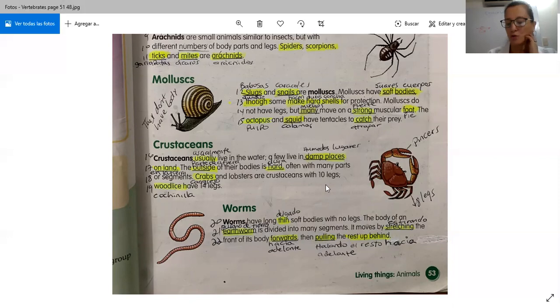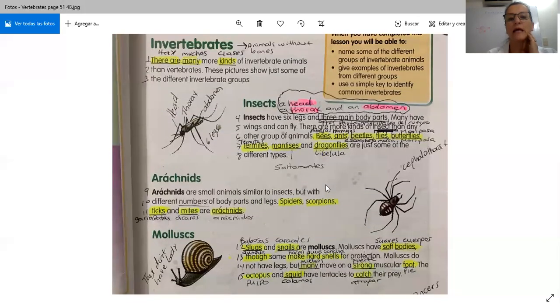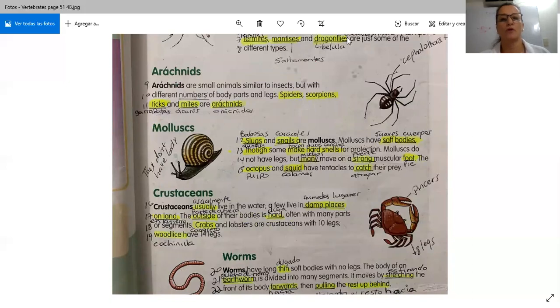Okay, amores. Esto es unos ejemplos de insectos. Entonces, amorcitos, necesito que dibujen en sus cuadernitos estos animalitos. Yo les voy a enviar el resumen para que los hagan. Pero necesito que vean los videos, amores. Necesito estar segura que ustedes están viendo los videos. Bueno, amores. Have a great day. And see you later. Bye-bye.